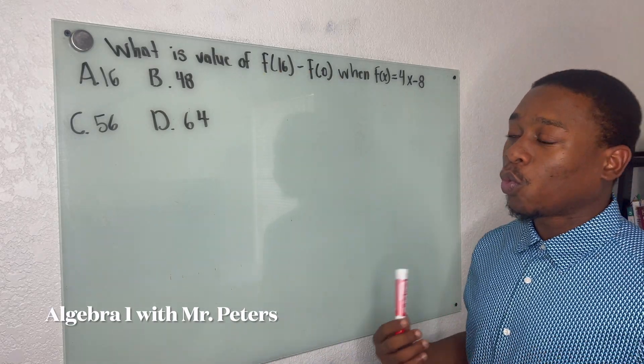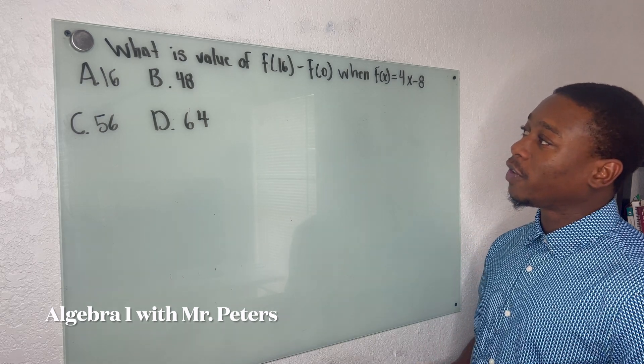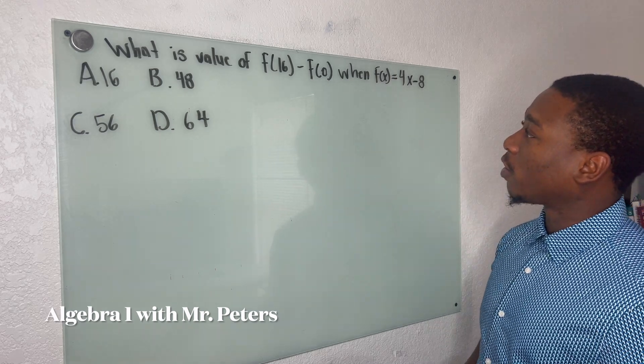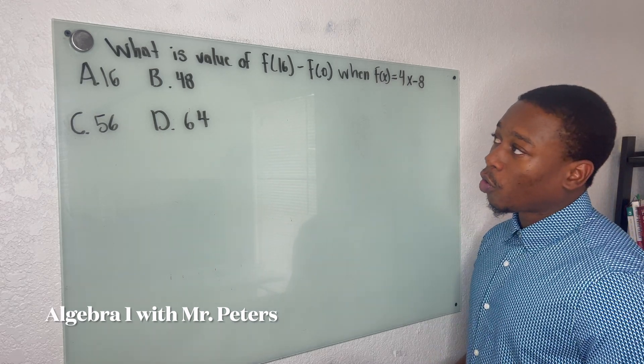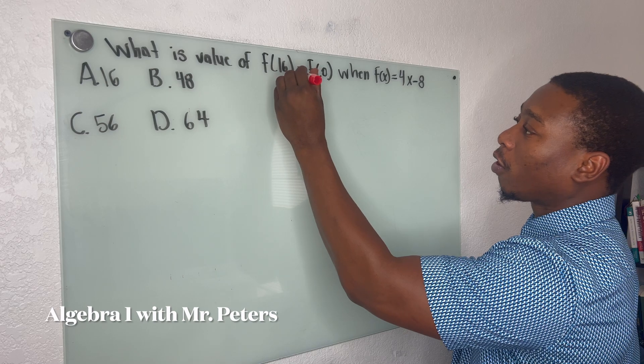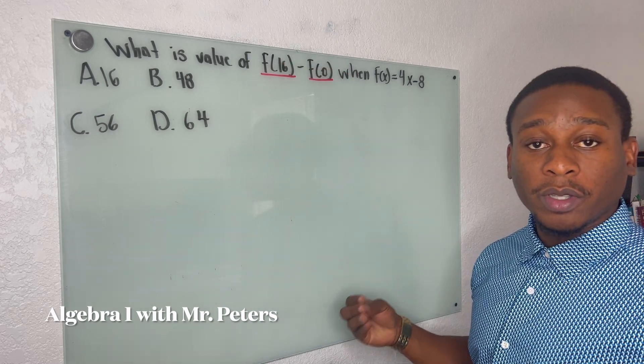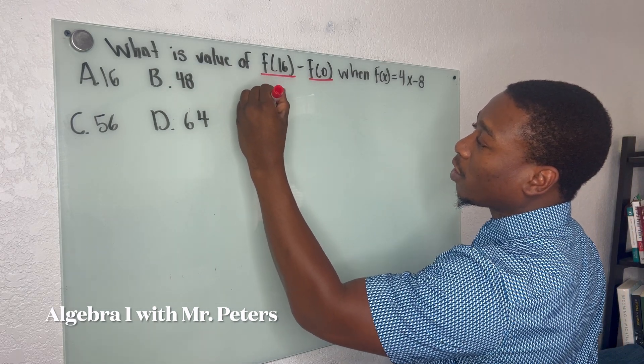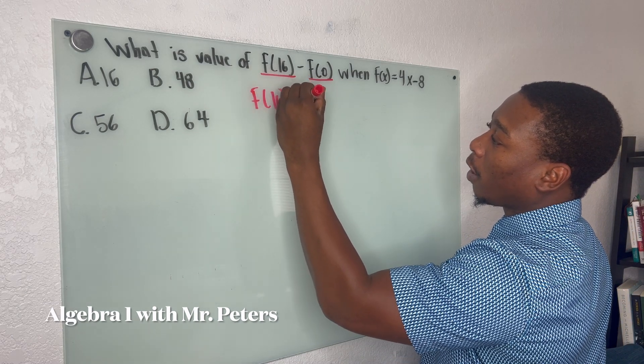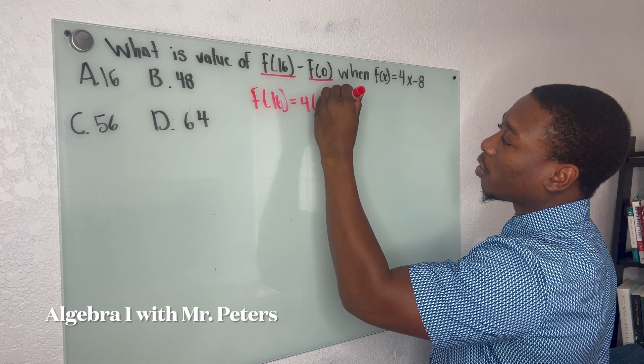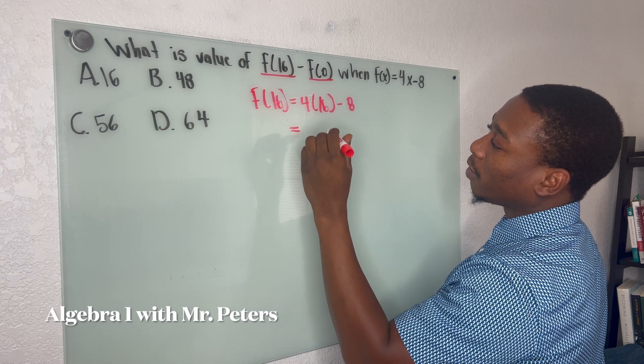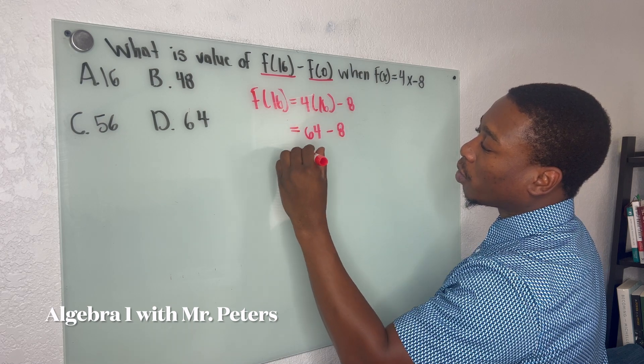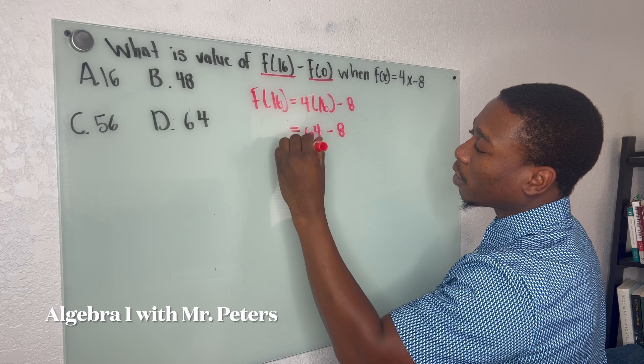So the first problem says, what is the value of f(16) minus f(0) when f(x) is equal to 4x minus 18? The way that we're going to want to solve is start off by understanding what is the output, the answer, when we plug these x's in. So when x is 16 and I substitute 16 in for x, I'm going to get 56 as an answer.